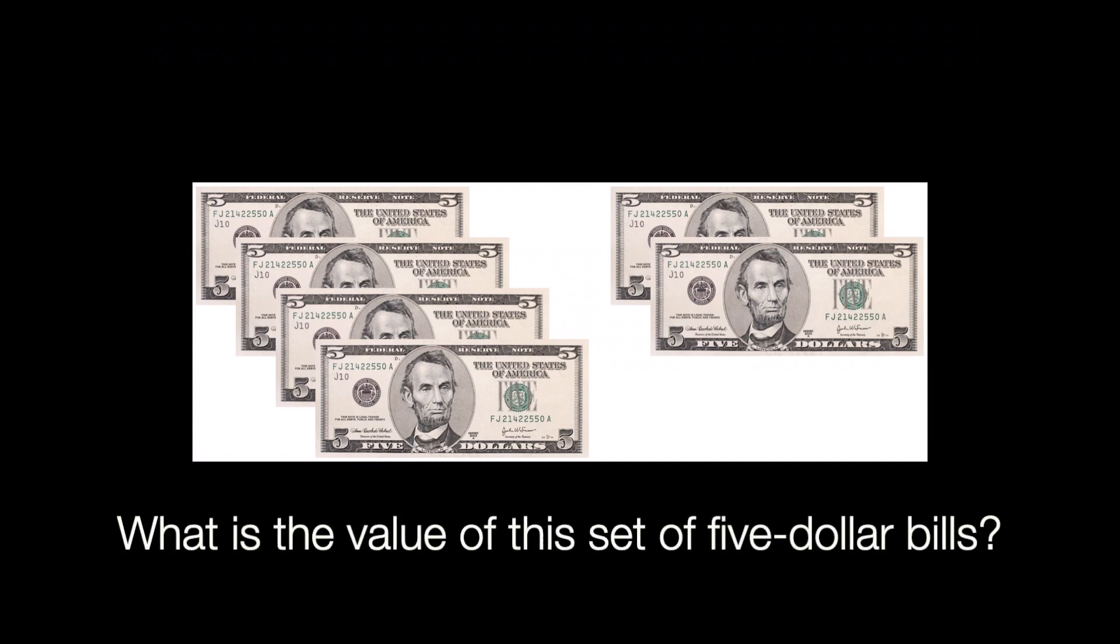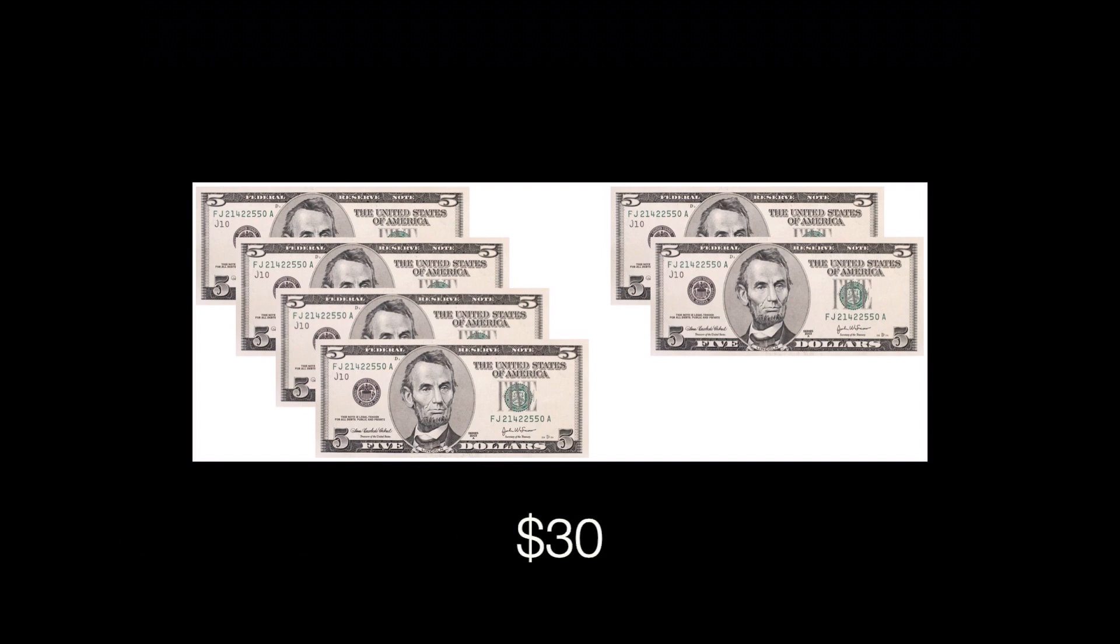Here we have several five dollar bills. So we can skip count by fives, which would probably be the most effective. So there are six five dollar bills here. So let's count by fives. We have five, ten, fifteen, twenty, twenty-five, thirty. There are thirty dollars right here.